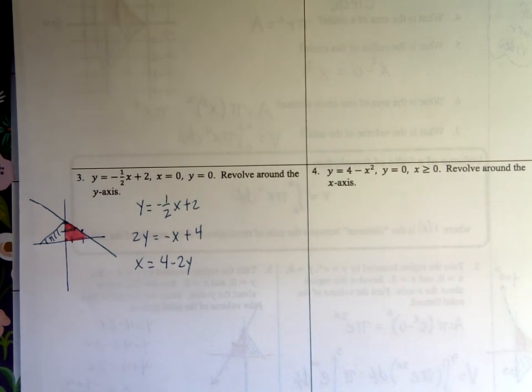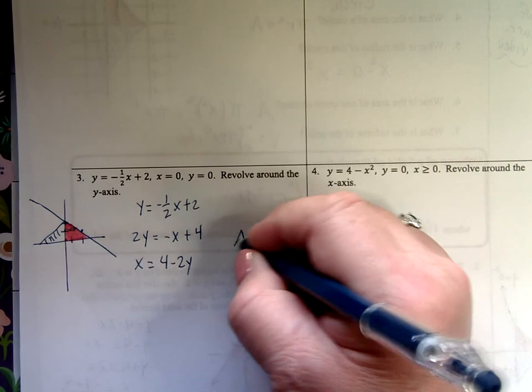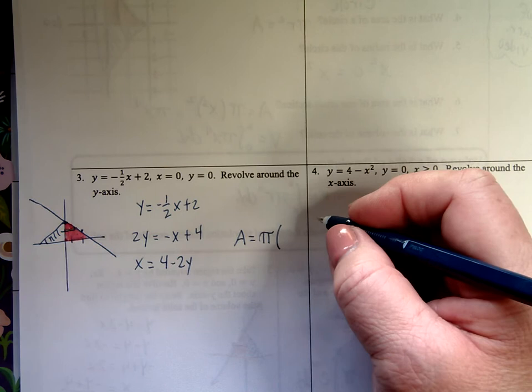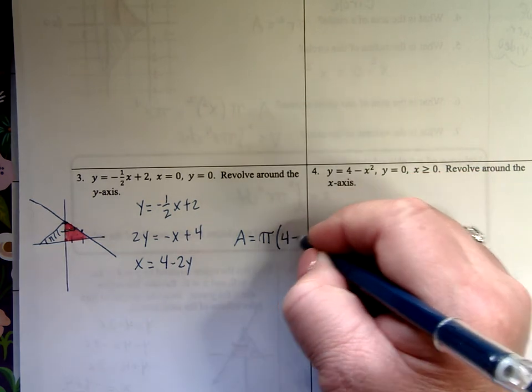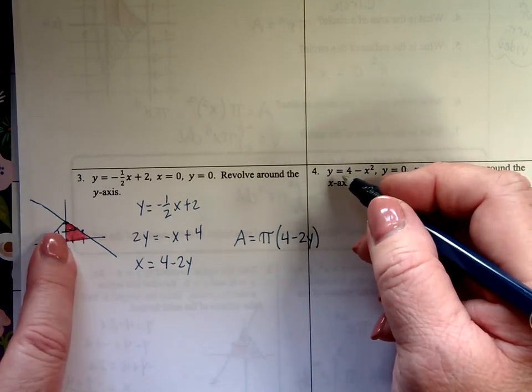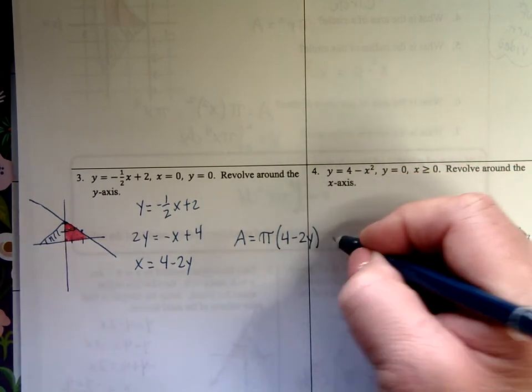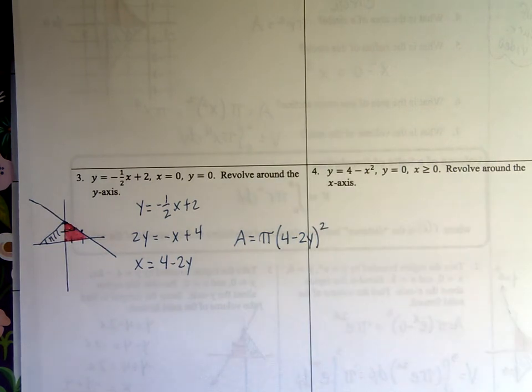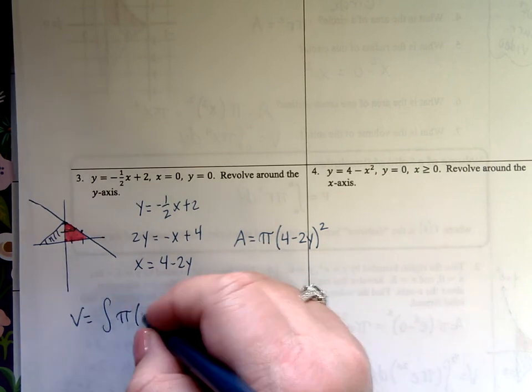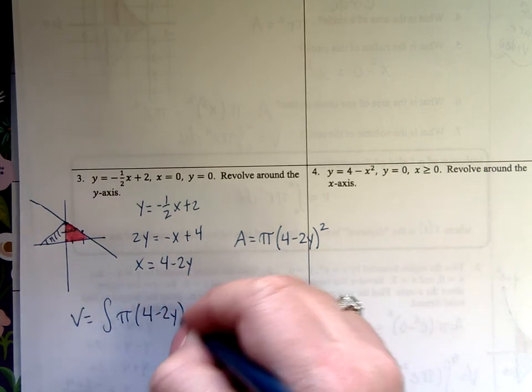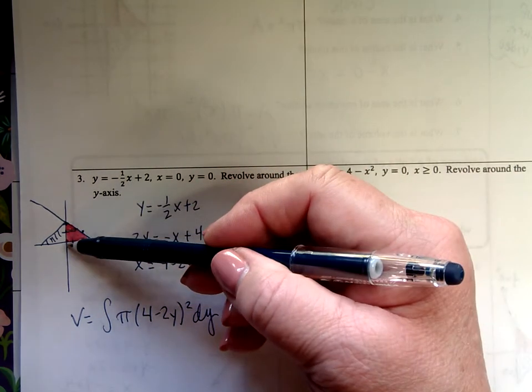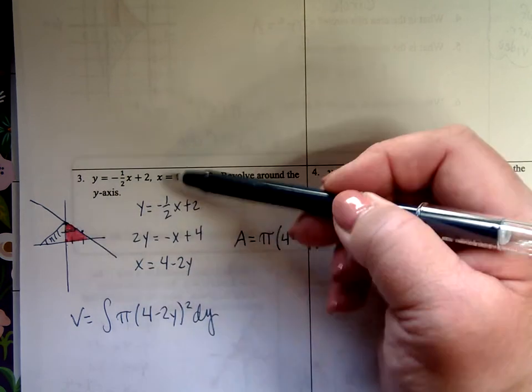So what's the area? The area is going to equal pi times my radius squared. The radius is 4 minus 2y. And then that's the right-hand side. The left-hand side hits 0, so technically it's minus 0. But I don't need that. So there's my area. What's my volume going to be? The integral of that. Pi times 4 minus 2y squared dy. What are the bounds? There are y values. This guy is 0 at the bottom, and the y-intercept of my line was 2. So 0 to 2.